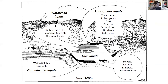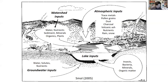We also have inputs from the ground — groundwater inputs — providing water, dissolved species or solutes, and nutrients. And then there are internal inputs from the lake itself: plants and animals living in the lake, and importantly, some minerals that actually precipitate and crystallize in the lake water. All of that ends up falling to the lake floor and becomes integrated into the sediment record, forming a really interesting layered archive of material inputs over time.